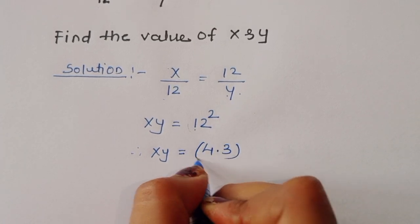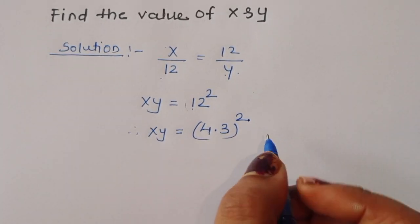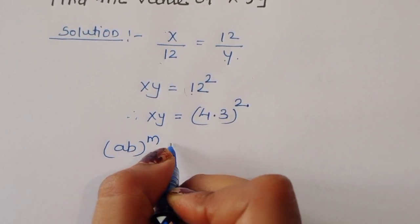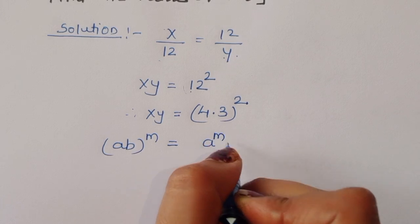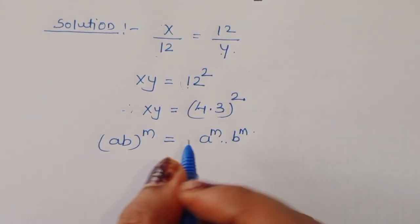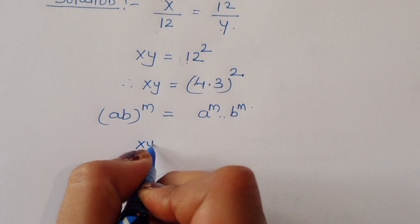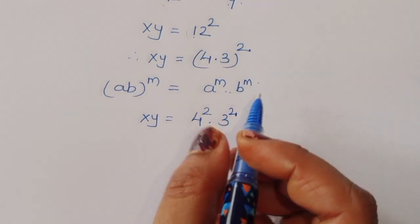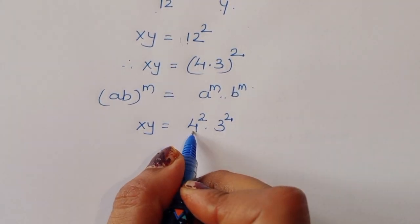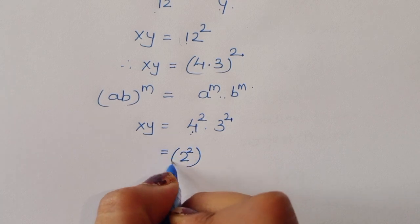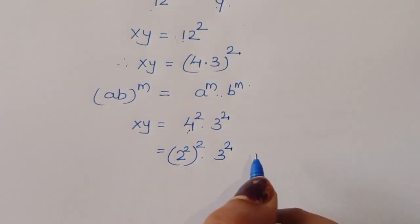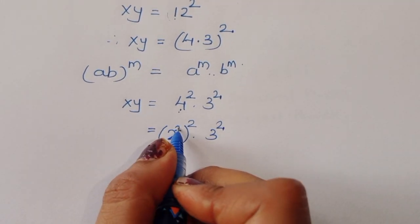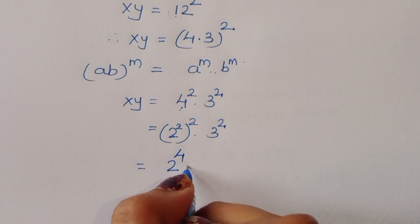So x times y is equal to 4 times 3, all squared. Now we know the formula: (a times b) power m is equal to a power m times b power m. Using this formula, x times y is equal to 4 power 2 times 3 power 2, which we can write as 2 power 2 all squared, times 3 power 2, giving us 2 power 4 times 3 power 2.